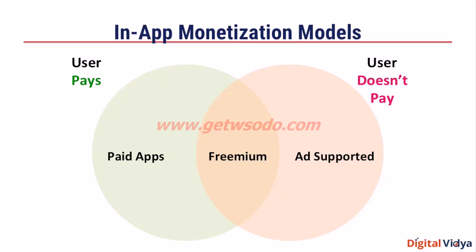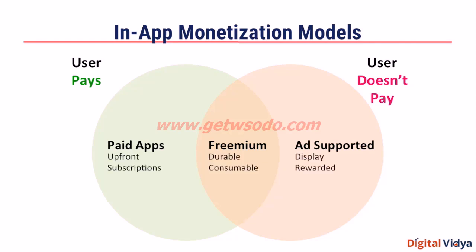In today's session, we are going to focus on in-app monetization models. There are two broad situations: one is where the user pays, and the other where the user doesn't pay. Paid apps fall under the situation where the user pays, and when the user doesn't pay anything at all, those models are usually ad-supported. In the middle, you have a situation where some users pay while others don't — that is called the freemium model. We're going to look at each of these in detail: within paid apps you have upfront payment and subscriptions; within ad-supported models you have display and rewarded ad formats; and within freemium, durable and consumable purchases.